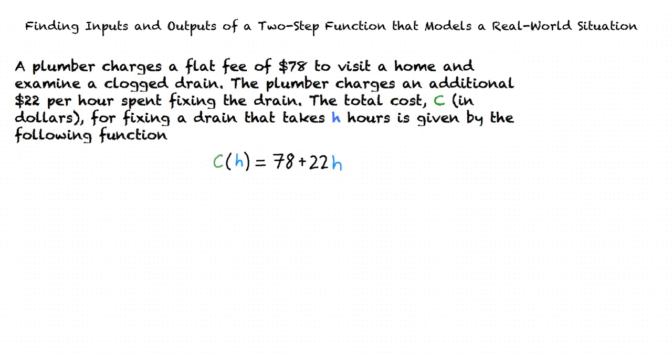In this problem, we have a plumber who charges a flat fee of $78 to visit a home and examine a clogged drain. The plumber charges an additional $22 per hour spent fixing the drain. The function C(h) = 78 + 22h gives the total cost for fixing a drain that takes h hours to fix.